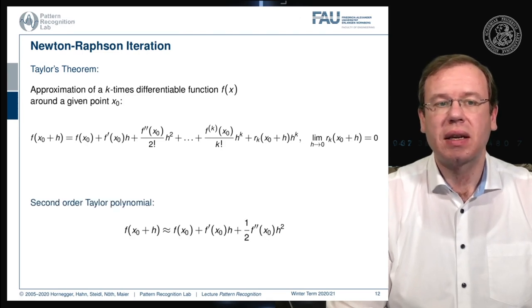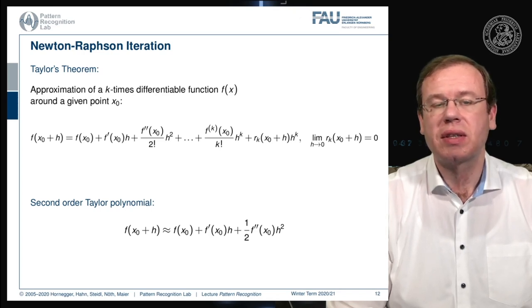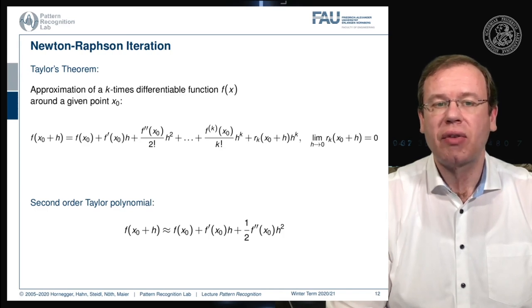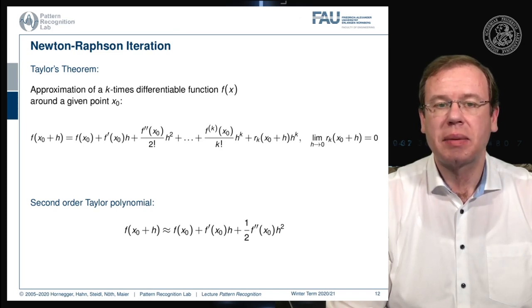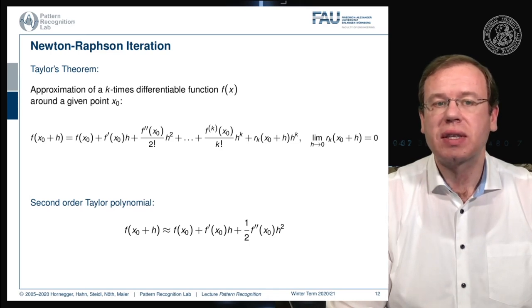In particular, we want to look into the second order polynomial, where we stop the expansion at two terms. So we have f of x0 plus f prime of x0 times h plus one half times the second derivative of f at position x0 times h squared. Now we are actually interested in finding h.